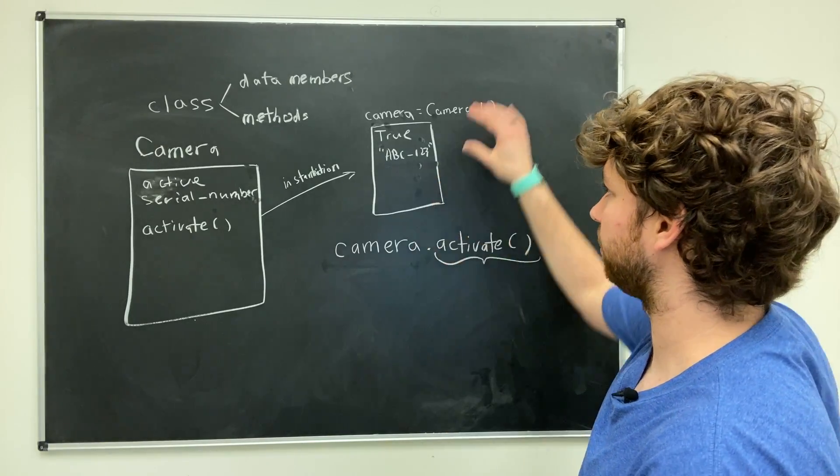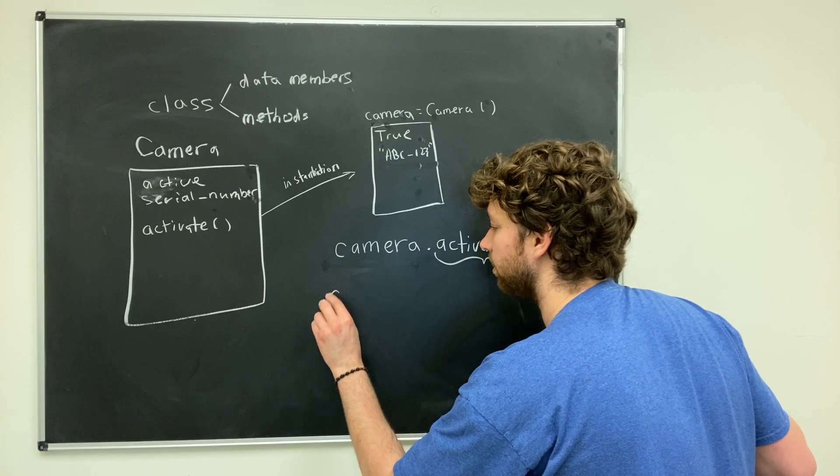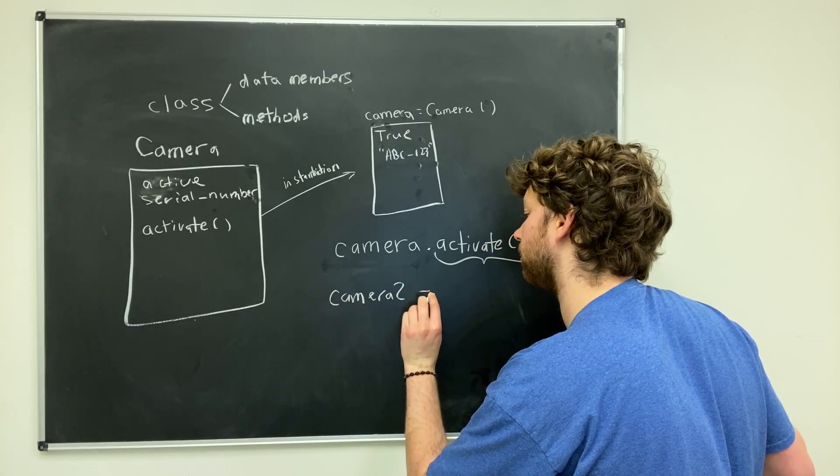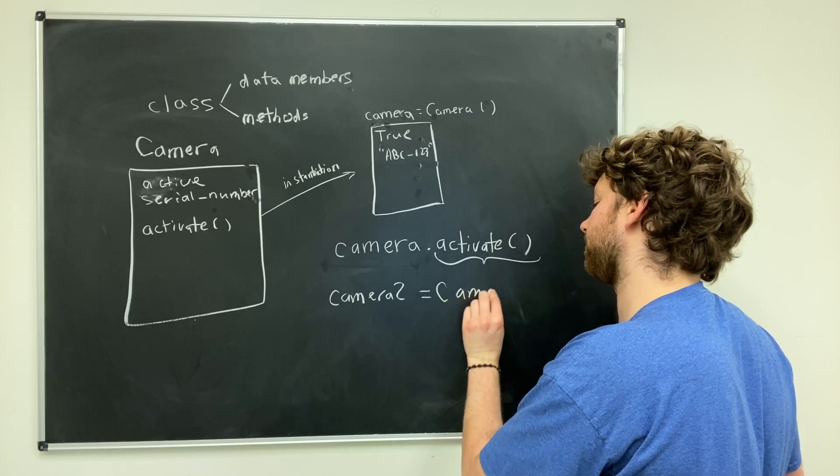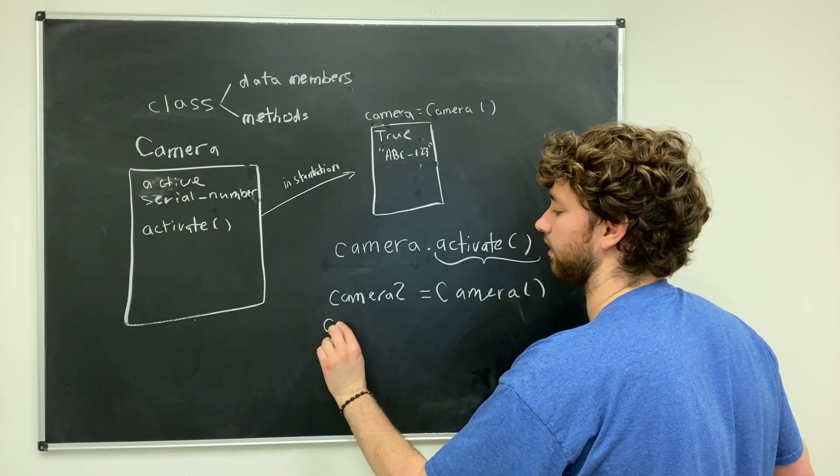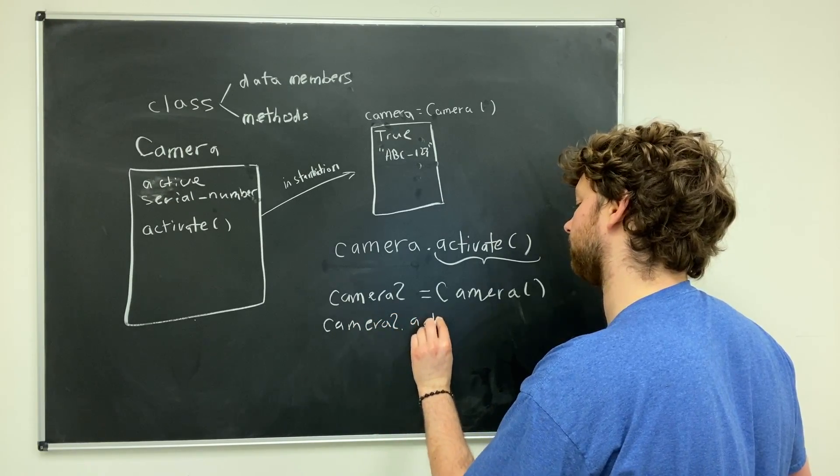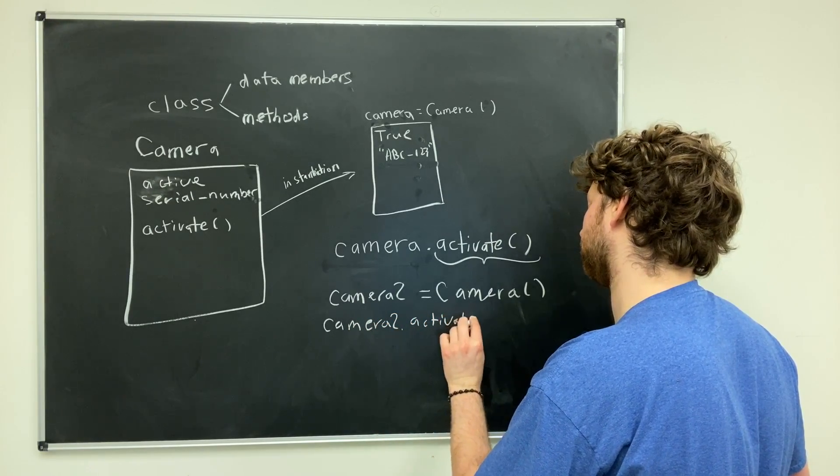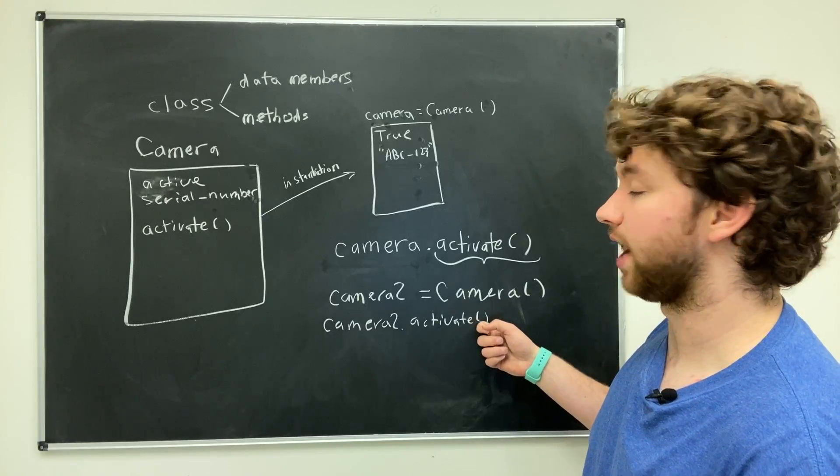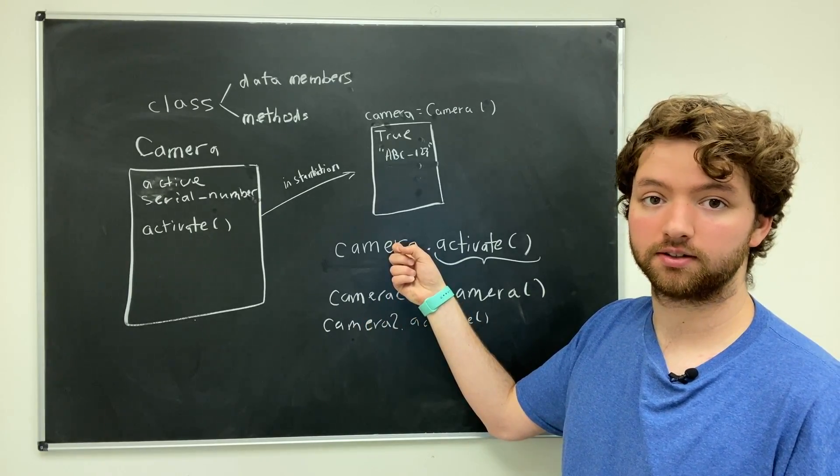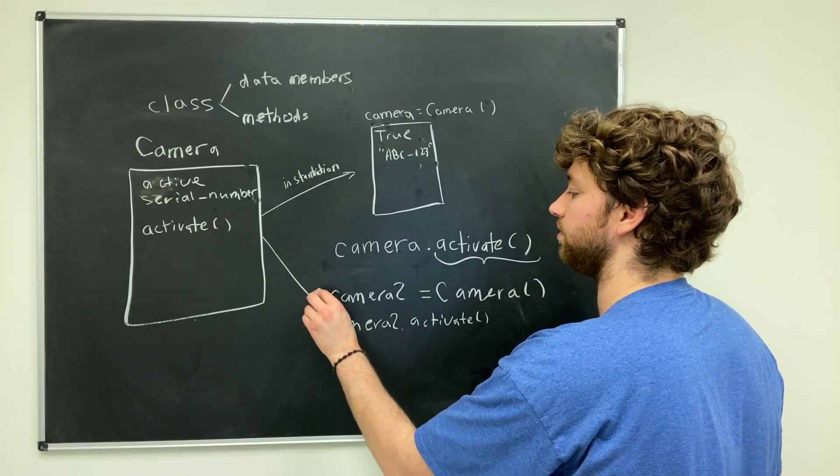Let's say we went ahead and created another camera object. We would just repeat these two lines of code. We would say something like camera2 is a new camera, and then we would say camera2.activate.